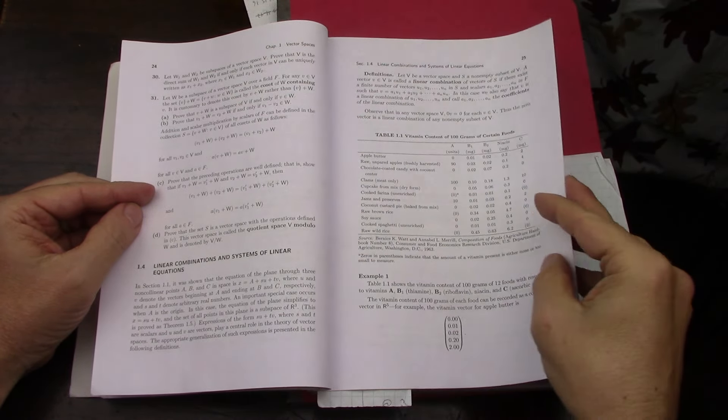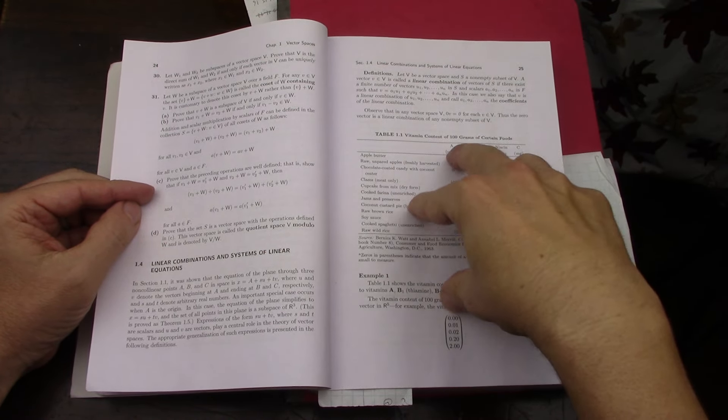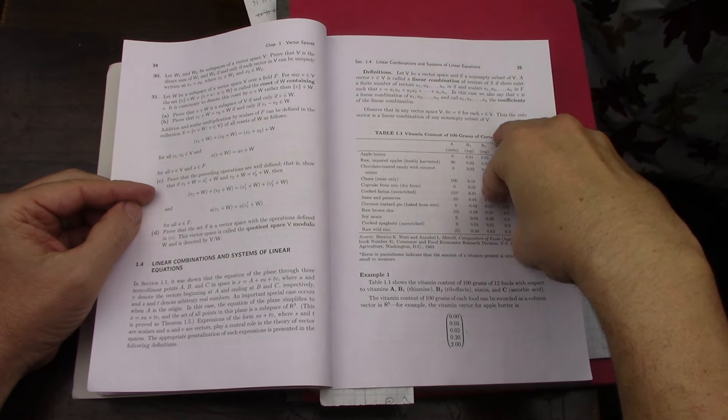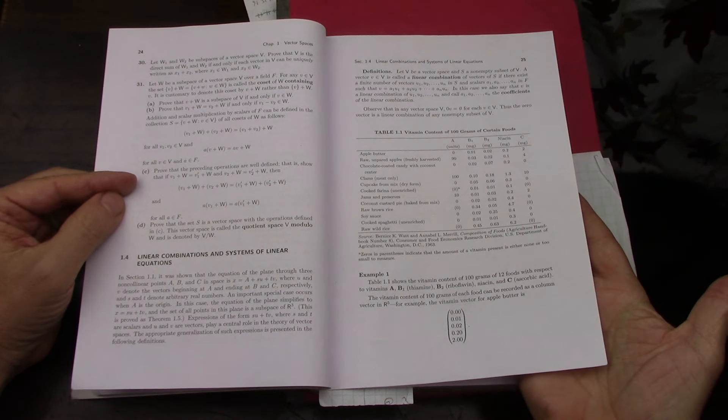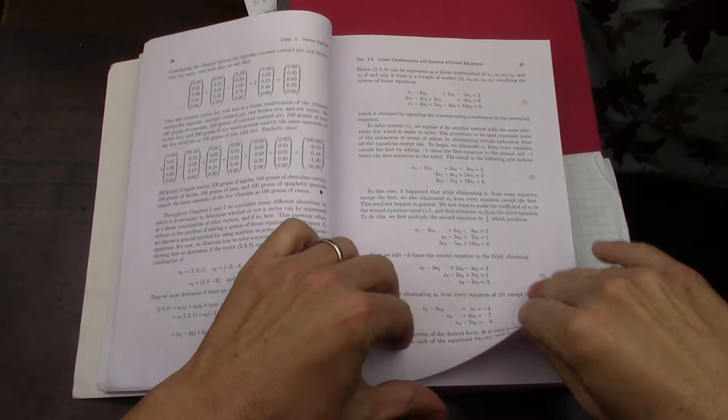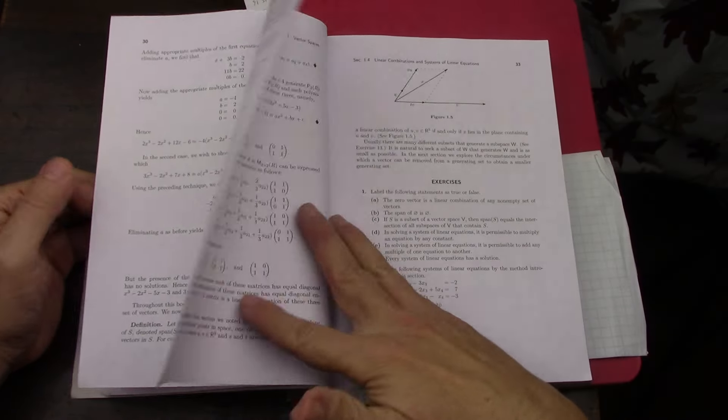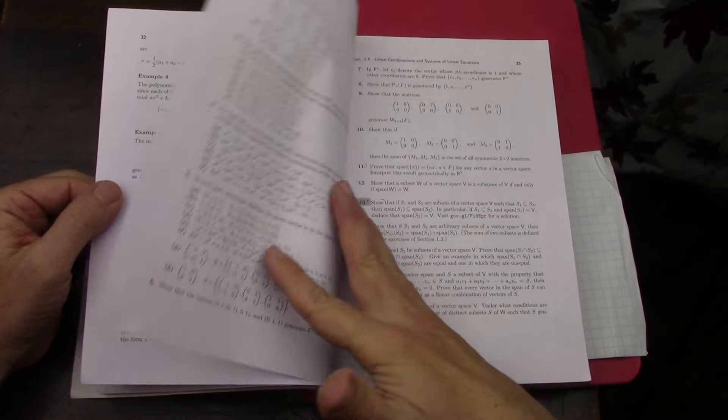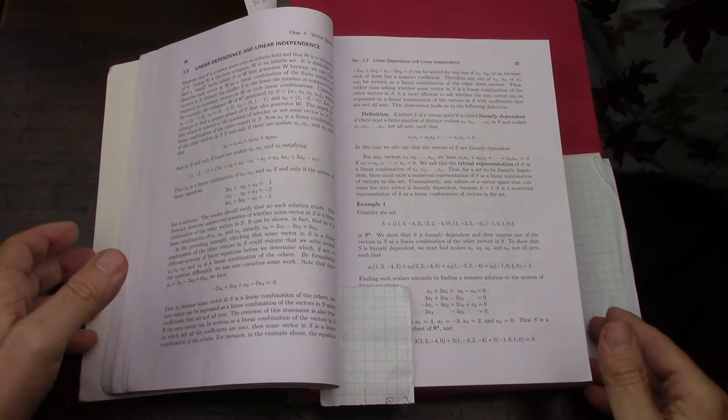This book is going to help me because the book after this book will be an abstract algebra book. Then section 1.4, our old friend linear combinations and systems of linear equations, and those are problems that take more space, and I'm familiar with from Anton. Of course, I'm going back through the same content, but now with proofs.